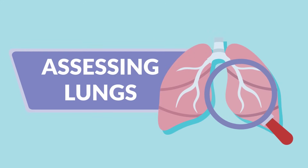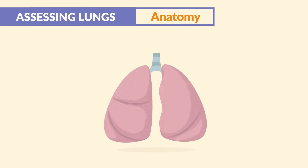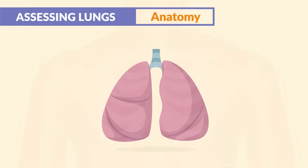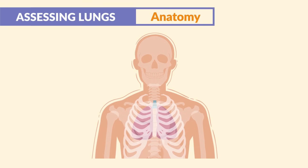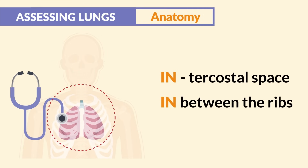Now for assessing the lungs, it's critical to understand the normal anatomy of the lungs. Starting with the lobes, the right side of the lung has three lobes and the left side only has two lobes. When we're listening to the lungs, we listen in between the ribs. This is called the intercostal space — just think 'in between the ribs' for intercostal — and that's where we listen.